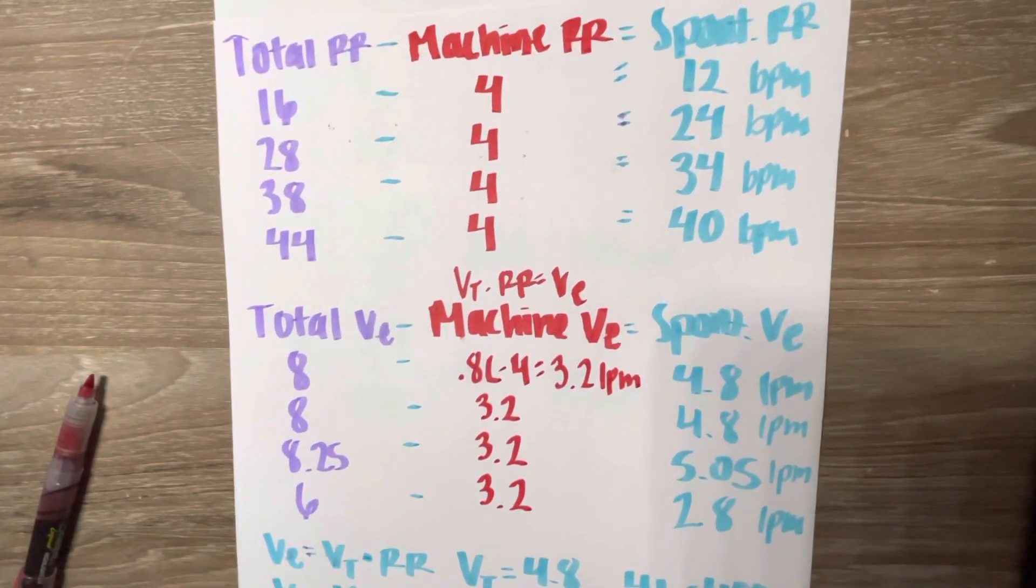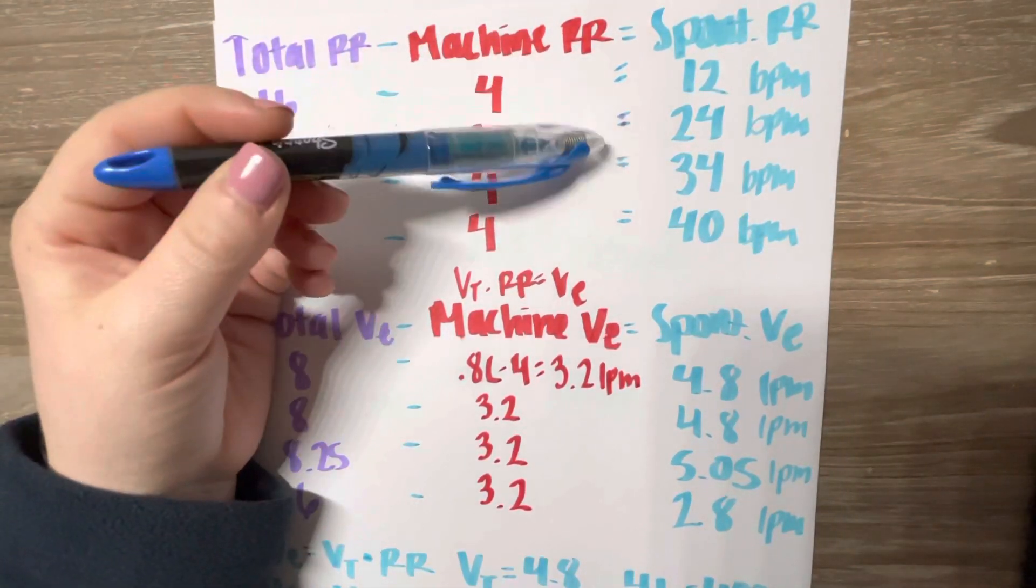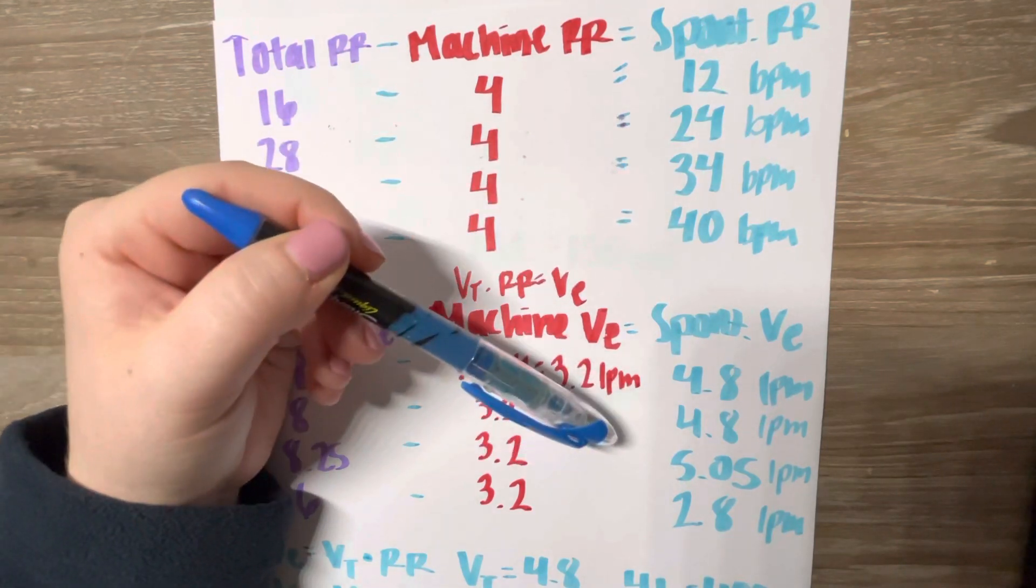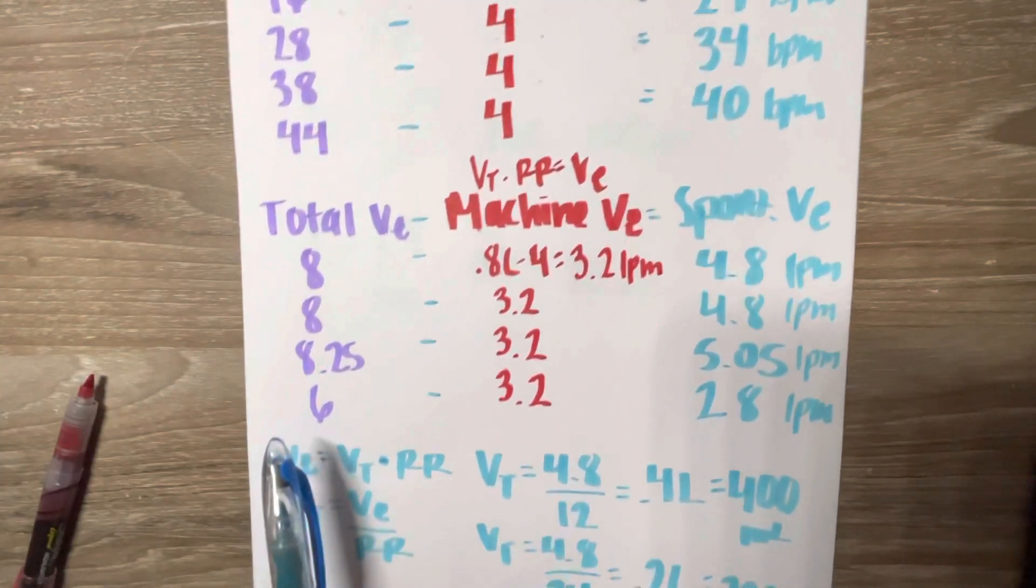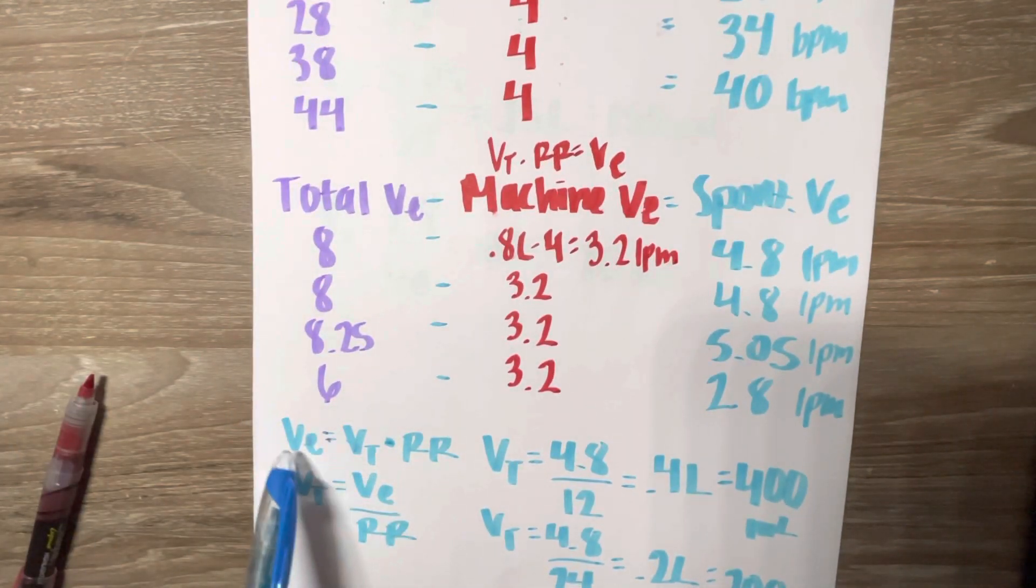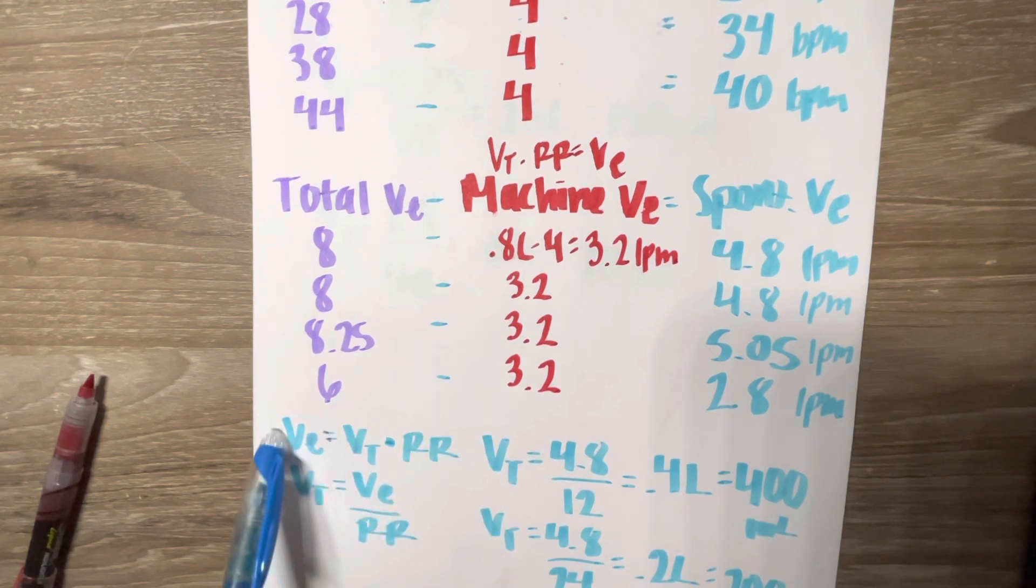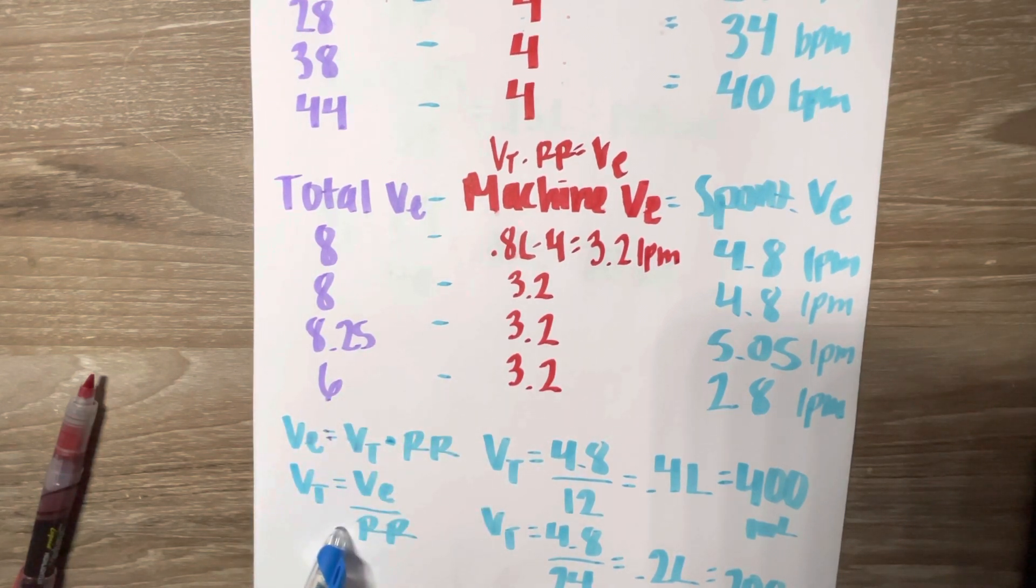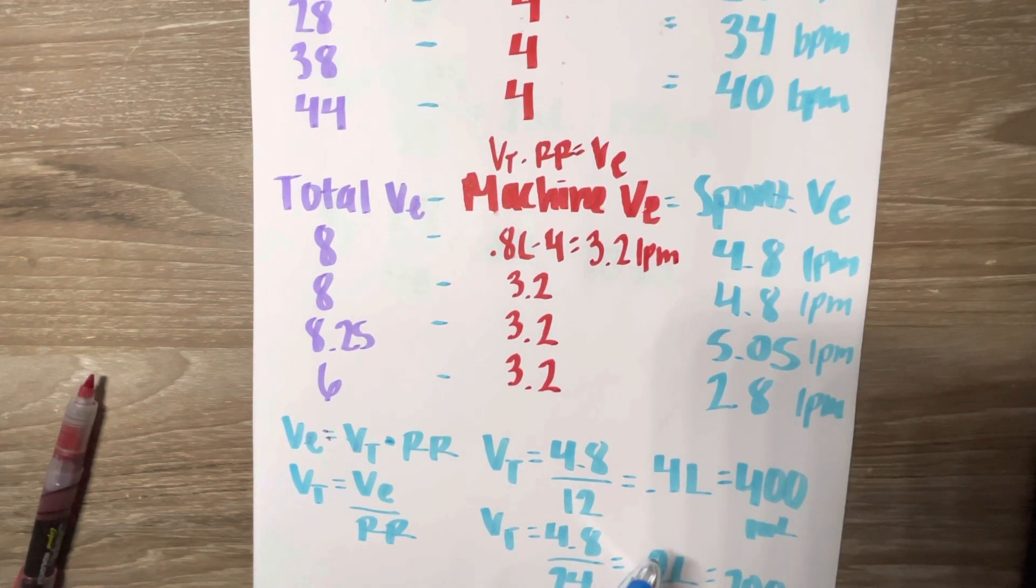So like I said, we have to find the spontaneous rate and the spontaneous minute volume in order to use this main formula right here. And we can just rearrange it this way to get our tidal volumes.